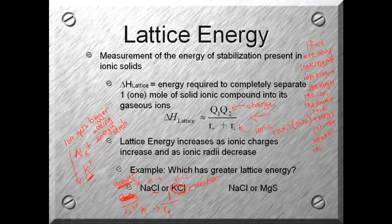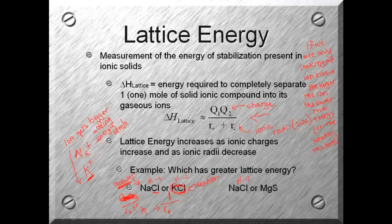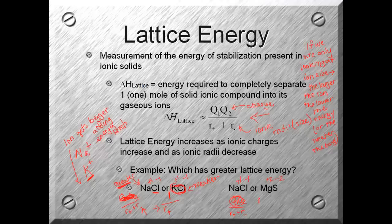Let's take a look at NaCl versus MgS. NaCl, which is a plus one, chlorine is a minus one. Here we have a plus two and a minus two. Here the charges are different, so we can look at the top: the Q1 Q2 over R plus plus R minus. So this number is going to dictate. Well, if we have a one and a one versus a two and a two, this will be four, this will be one. The MgS will be greater.